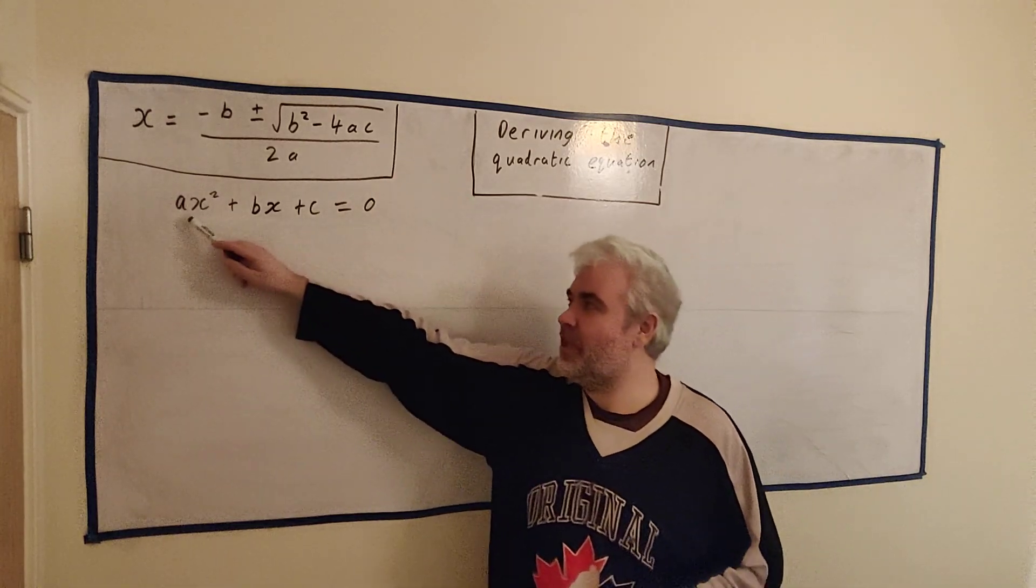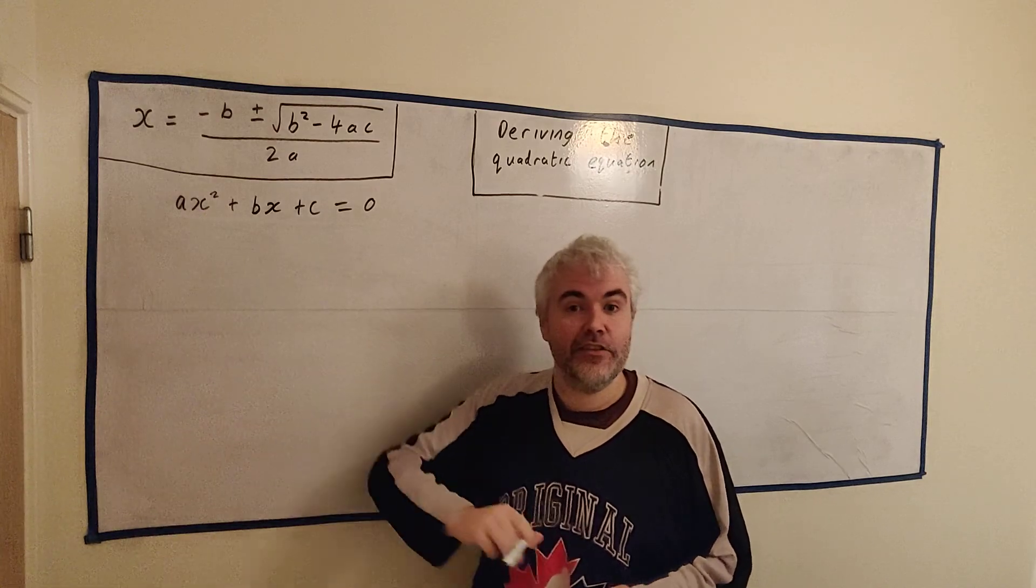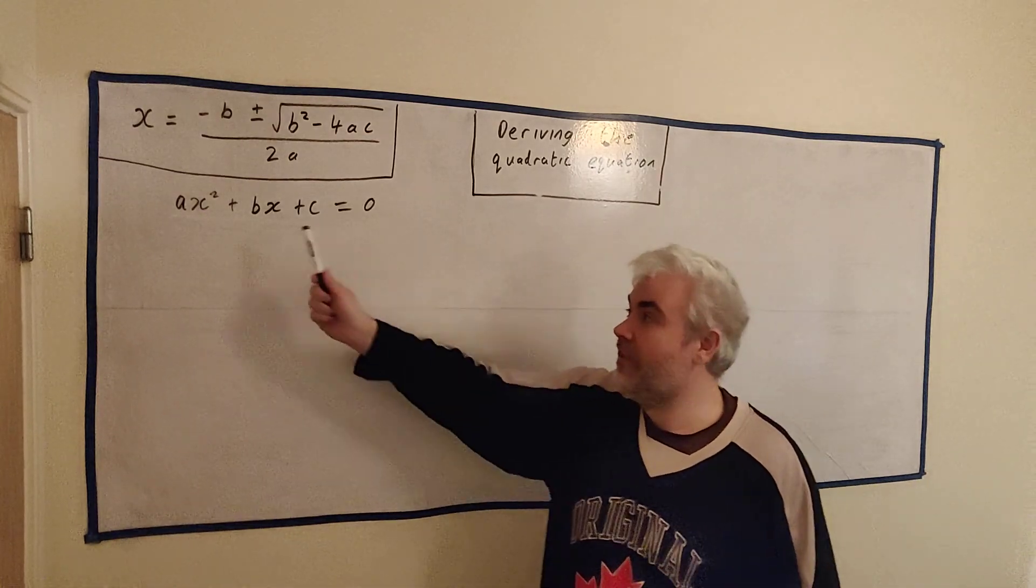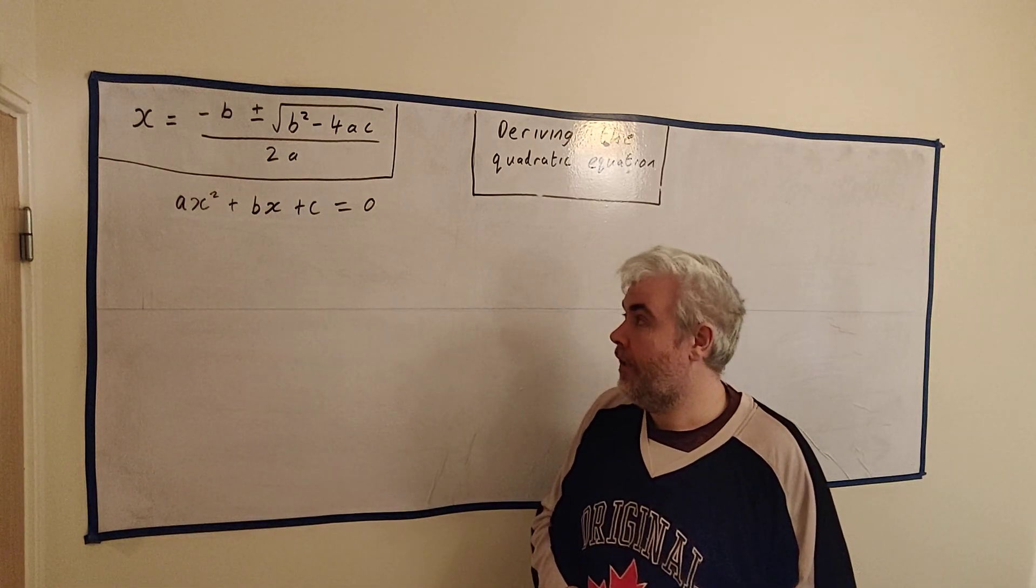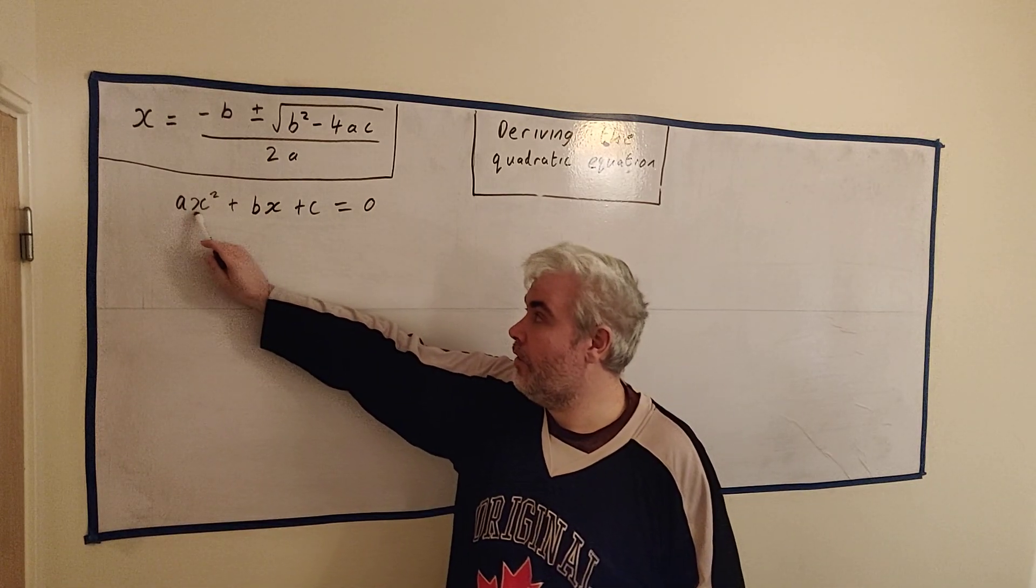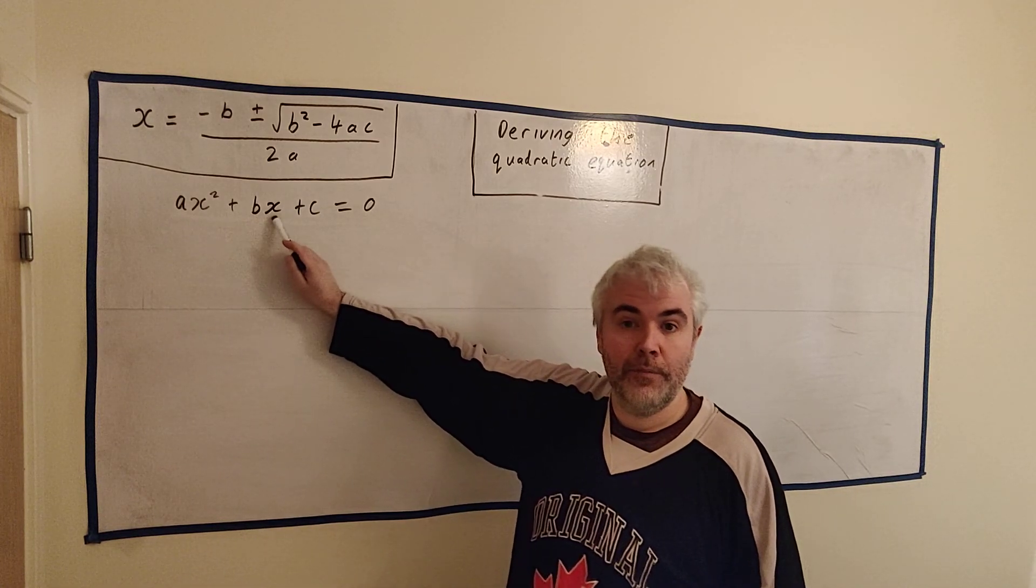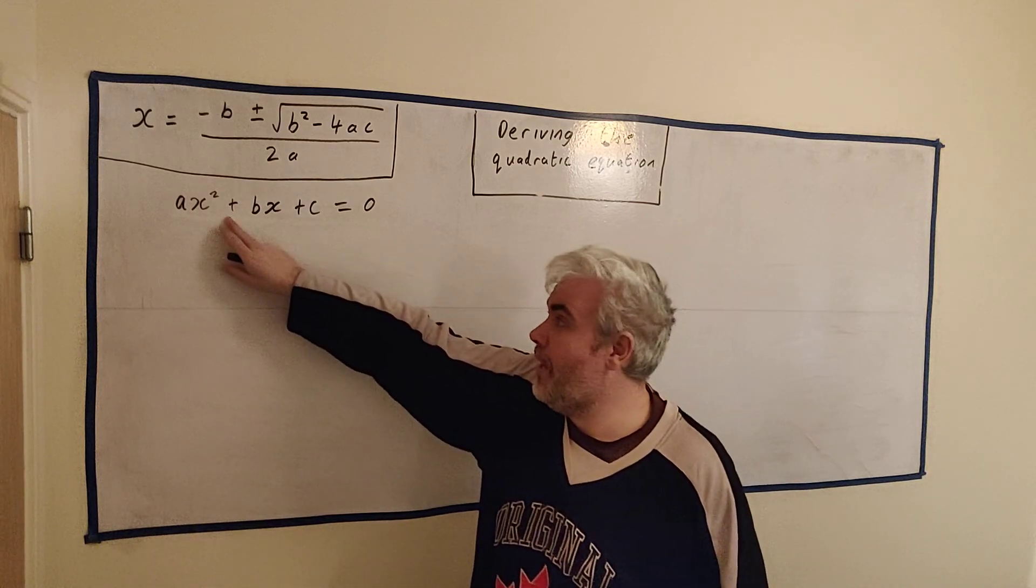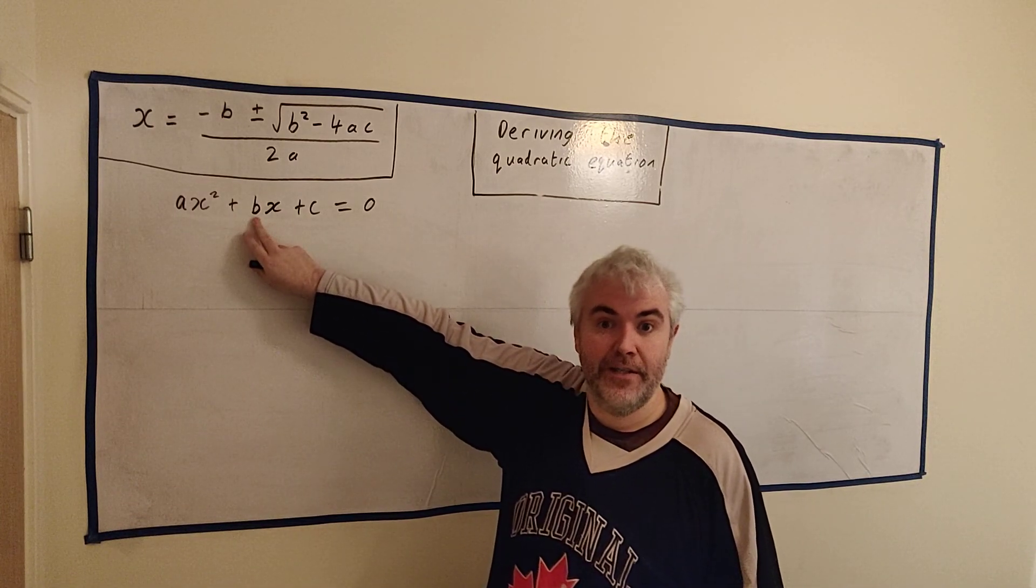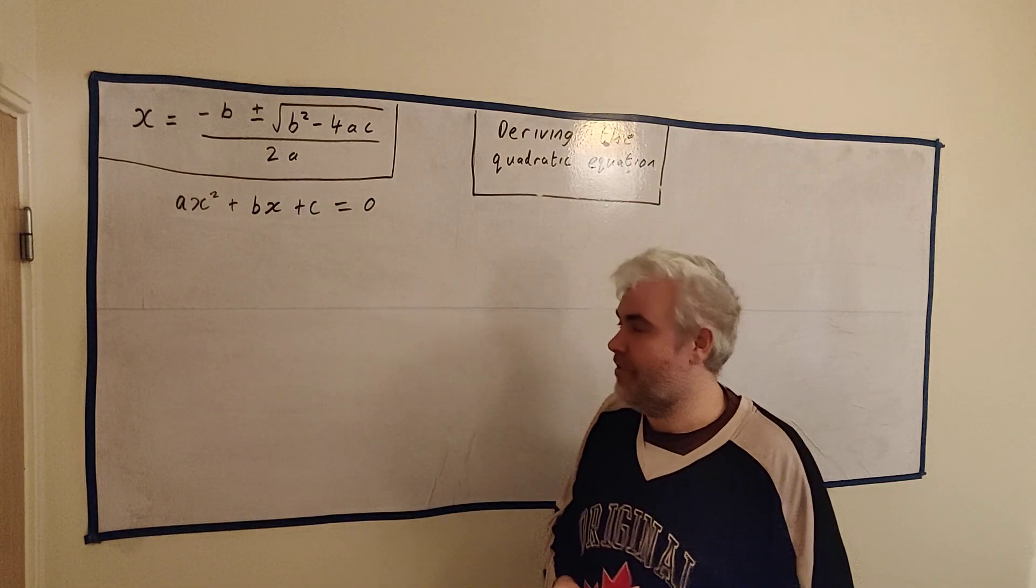This formula should always be accompanied with this line. This line tells us what we can solve. Anything that looks like this can be solved using this. That is a number multiplied by x squared plus a number multiplied by x plus a number equals 0. Now these could be minuses, by the way. That just means b is minus.